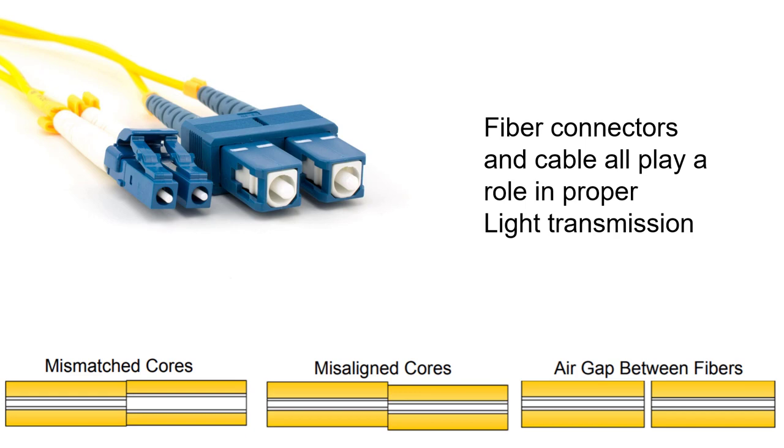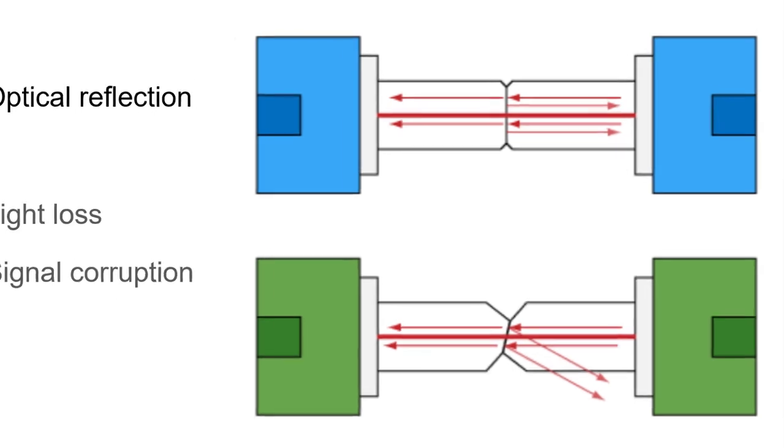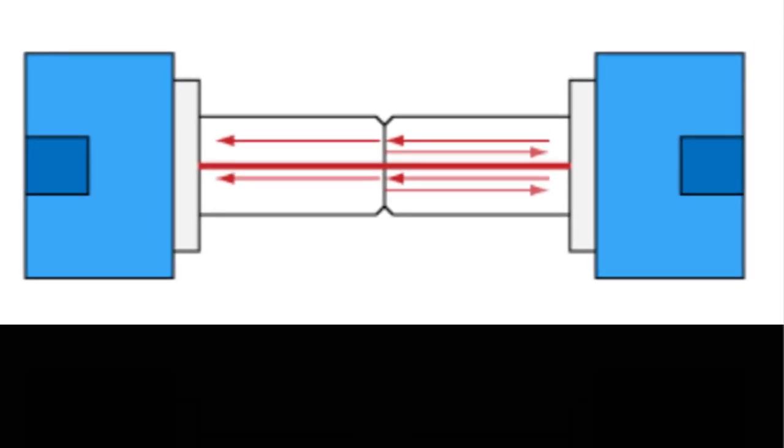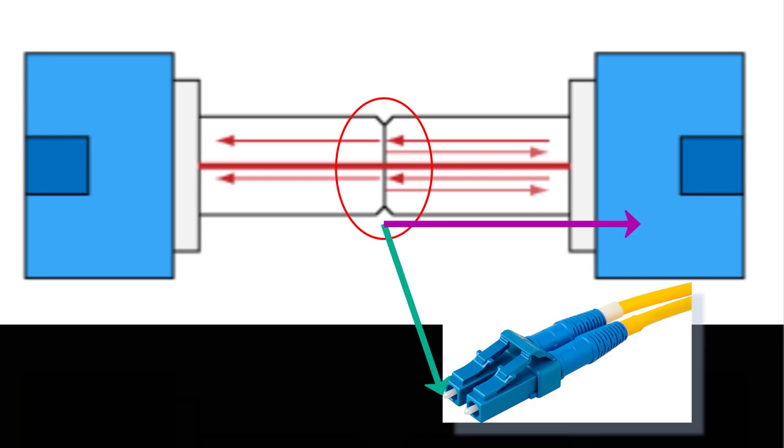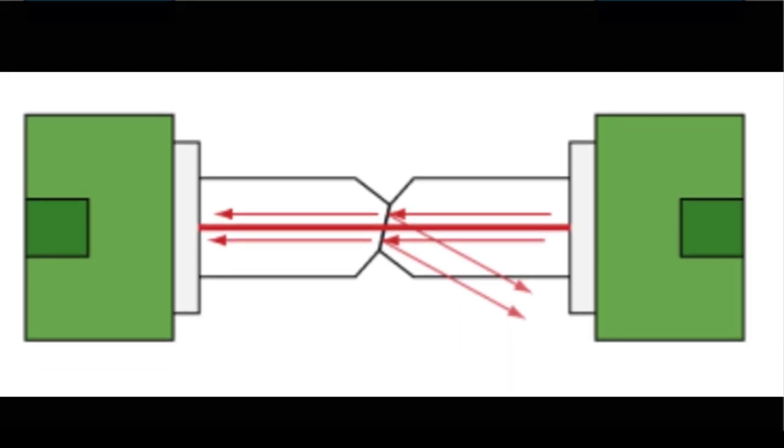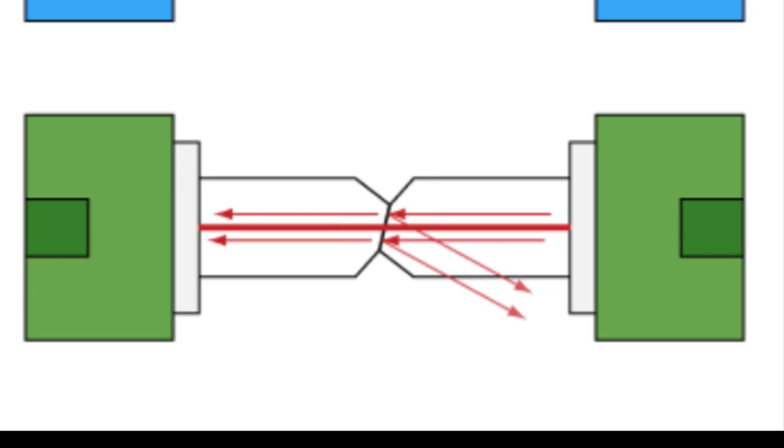Fiber connectors and cables all play a role in good light transmission. Down below, you can see connectors that have mismatched cores, or misaligned cores, or air gaps between the fiber connectors. All of those are going to create light losses or scattering. You're going to have problems with your data transmission. Another problem is optical reflection. Here you can see two connectors join. And right here at the joint, you can see that light is being reflected back to the transmitter. This is going to create problems with digital transmission. Another one down here, you can see there is an angle or a bevel to the connection between the two mating connectors. Again, you see light reflected off. These are things that impact digital signal transmission.